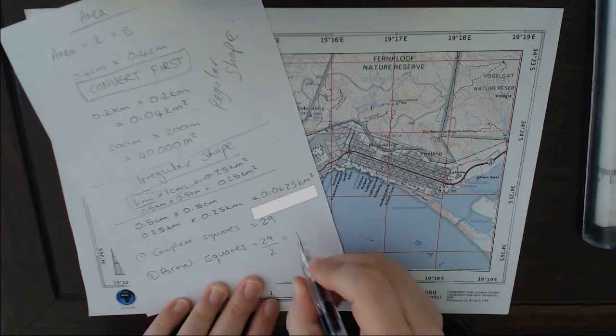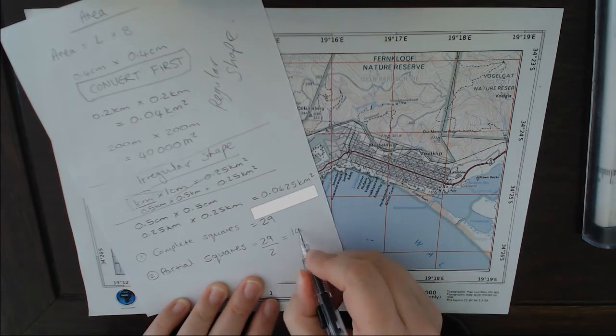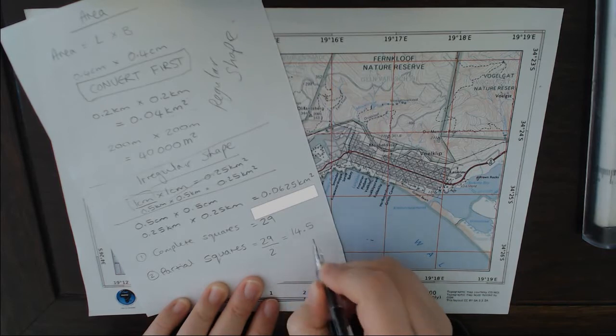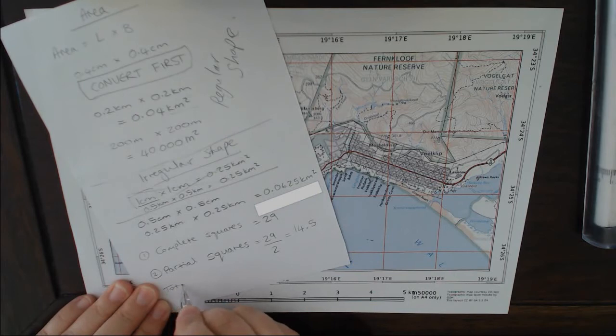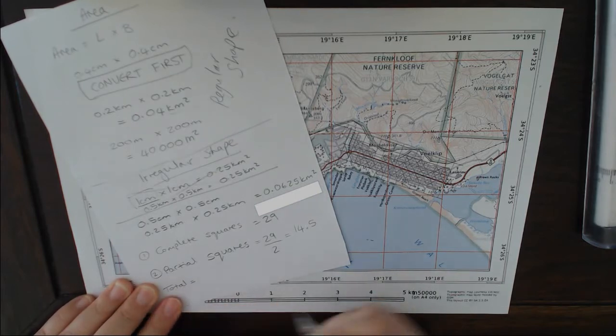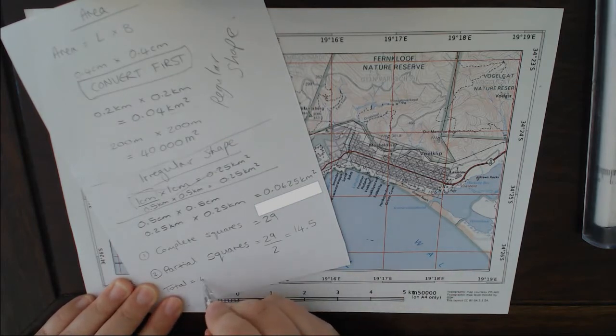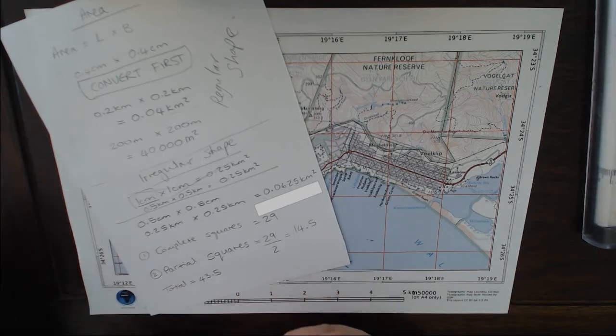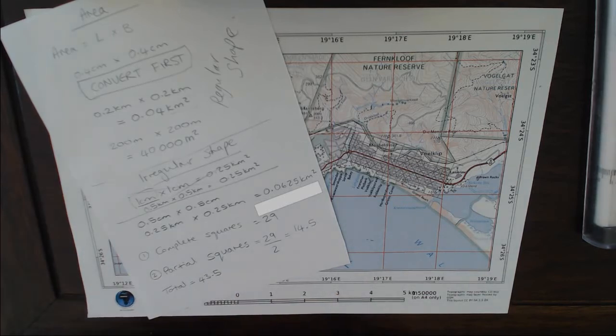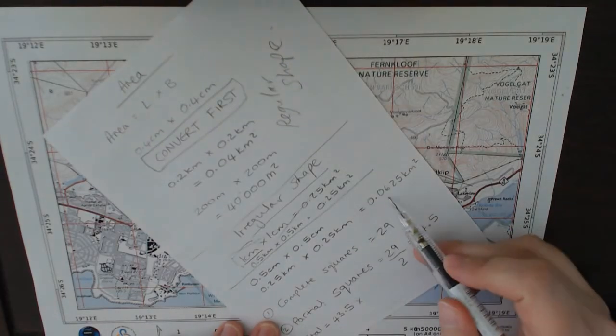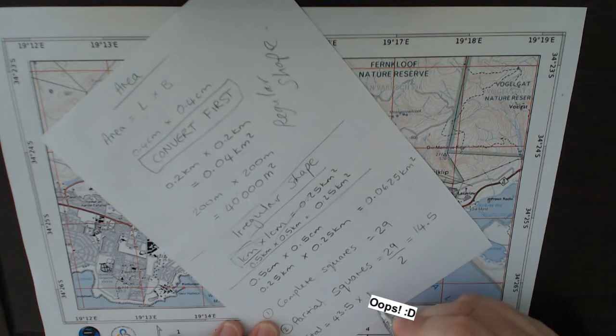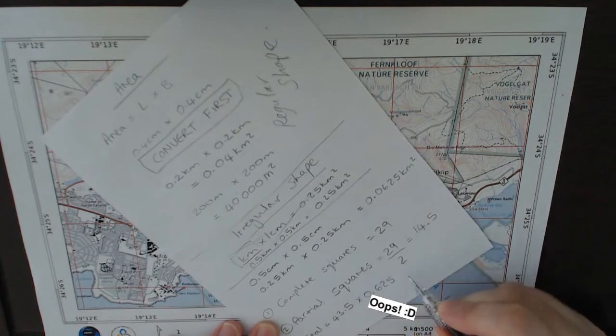My total is 43.5 squares, and I'm going to multiply that by my square kilometers that we calculated further up, which is 0.0625 square kilometers. I accidentally leave out a zero here, but I did put the zero into the calculator, so the answer is correct. Just don't forget that zero - 2.72 square kilometers.